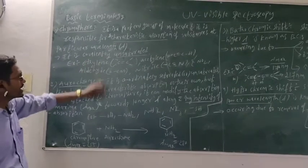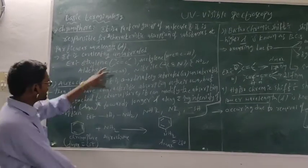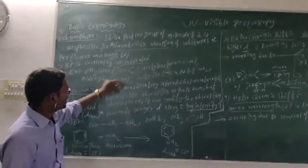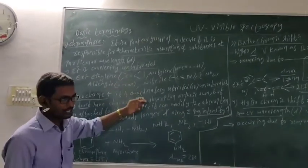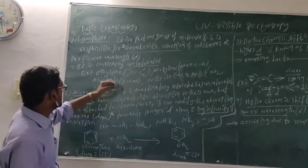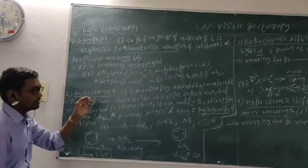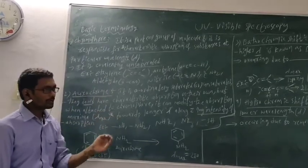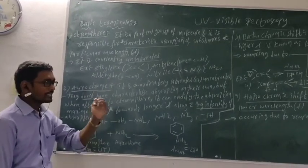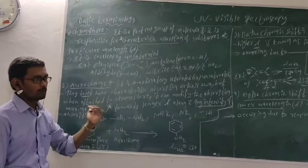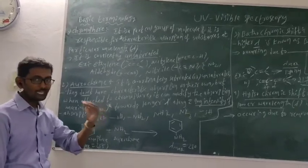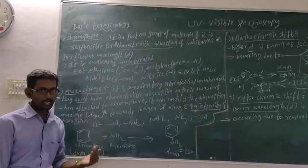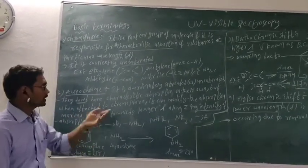To summarize: molecules containing double bonds or lone pairs of electrons act as chromophores. That means they can absorb UV-Vis radiation and can be studied using UV-Vis spectroscopy.